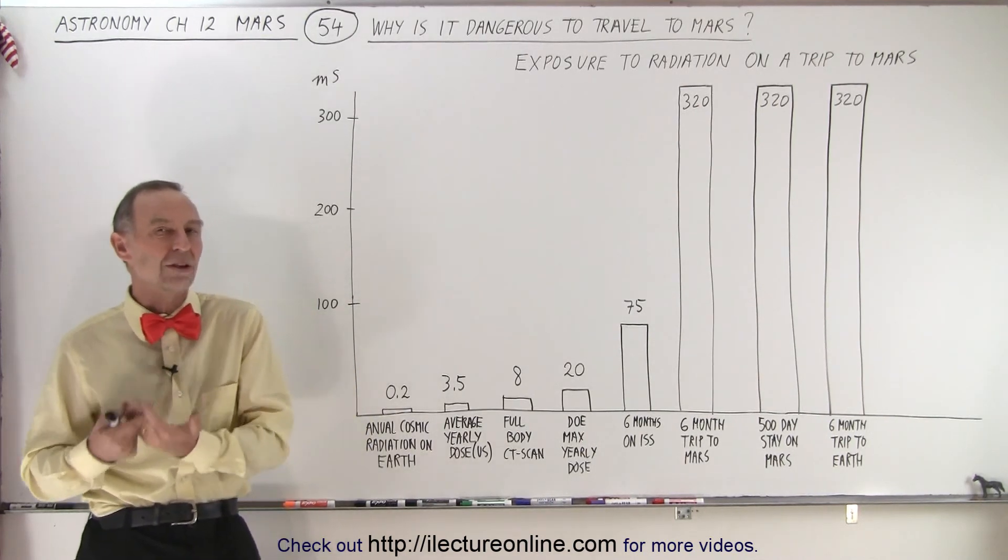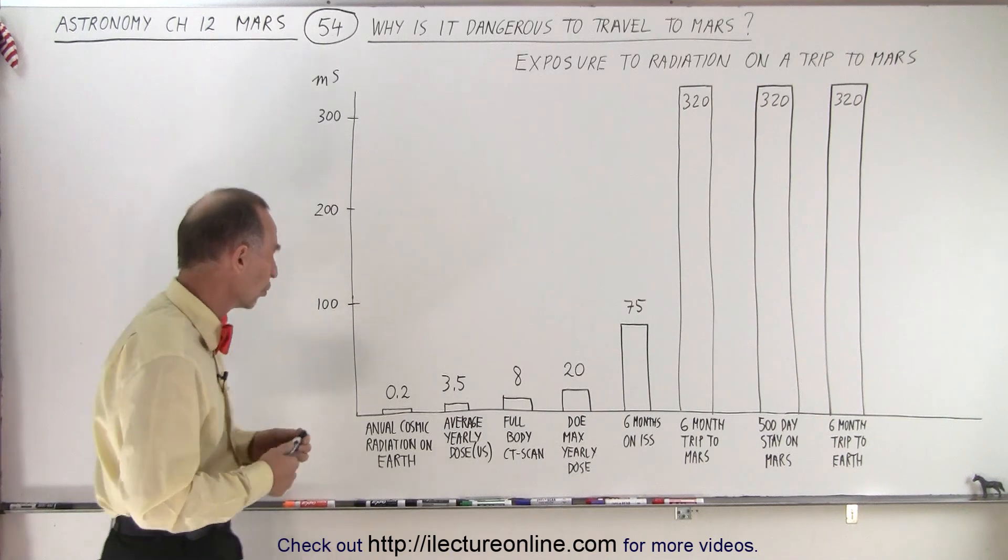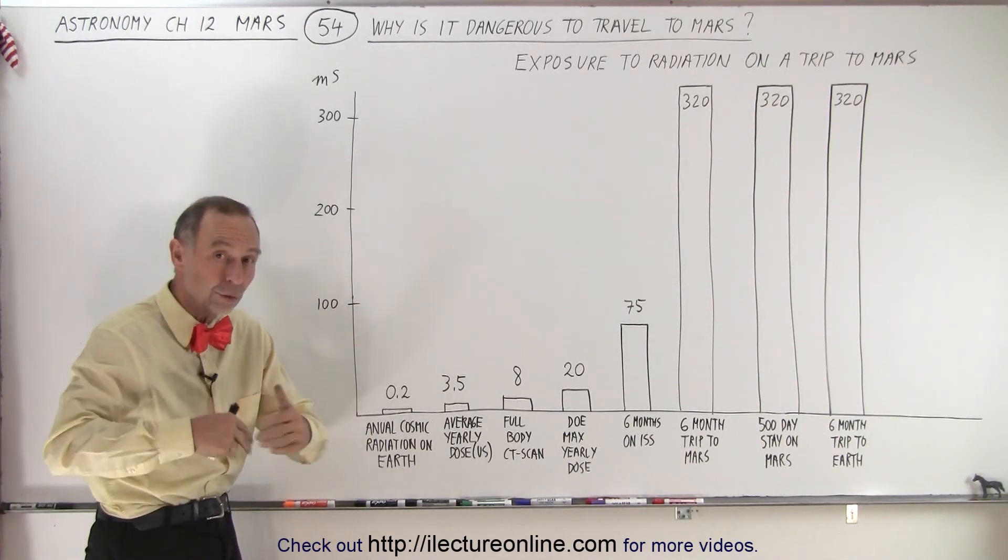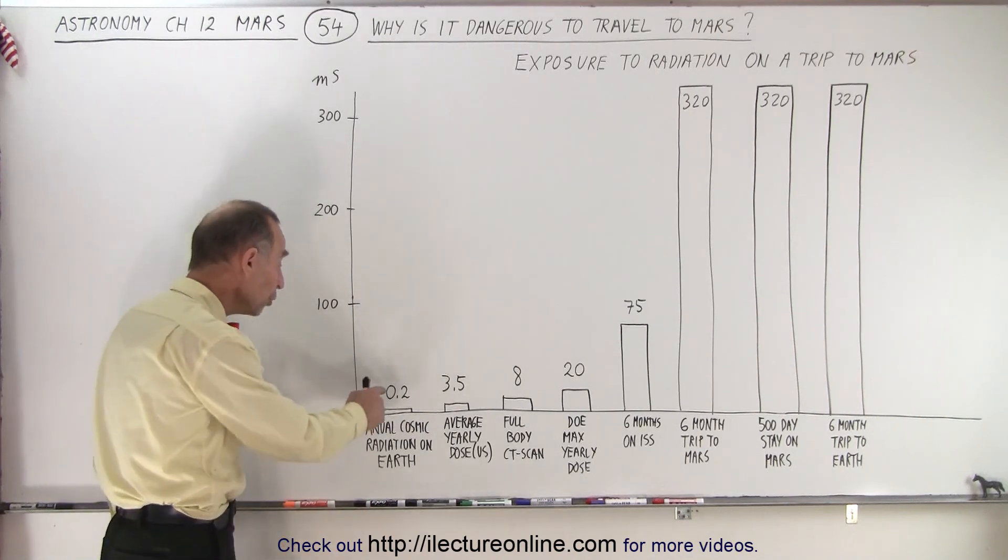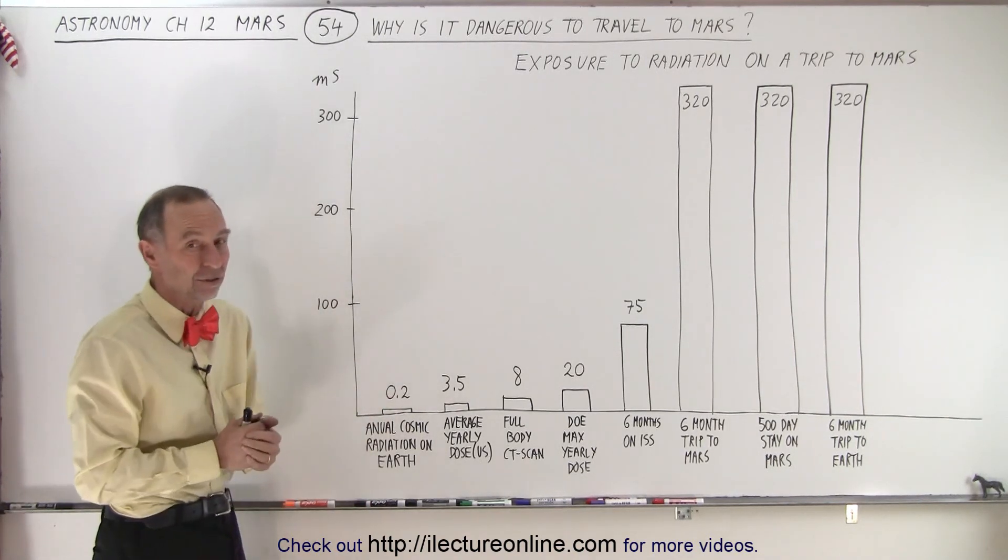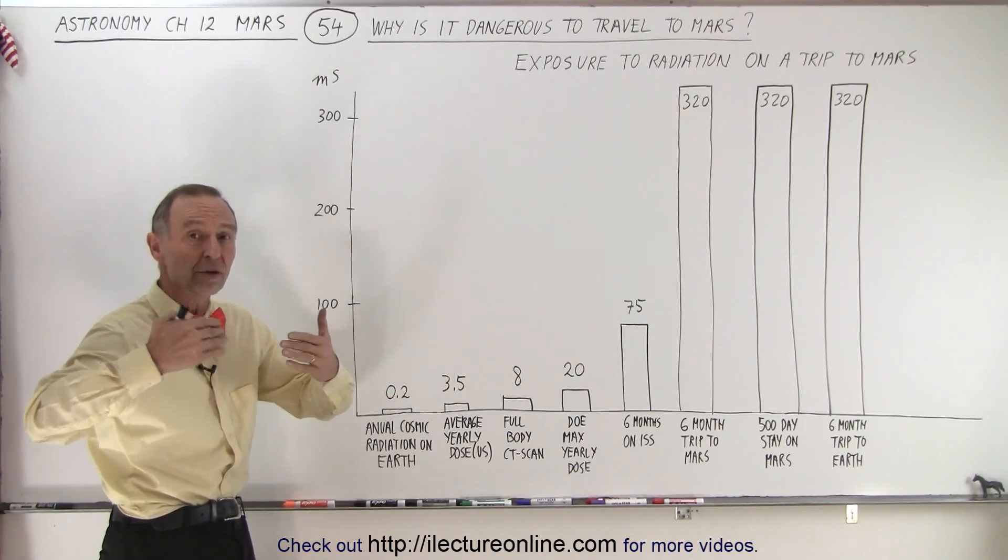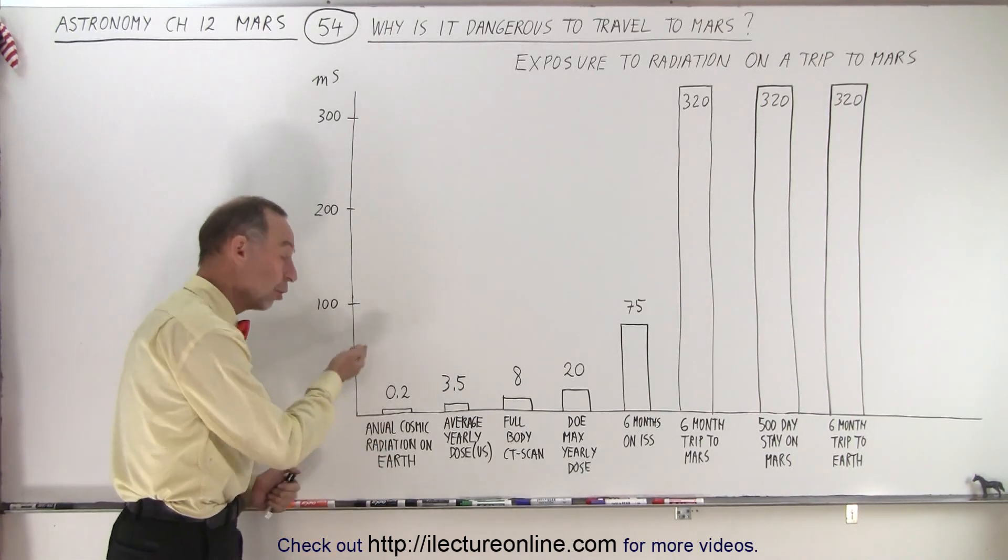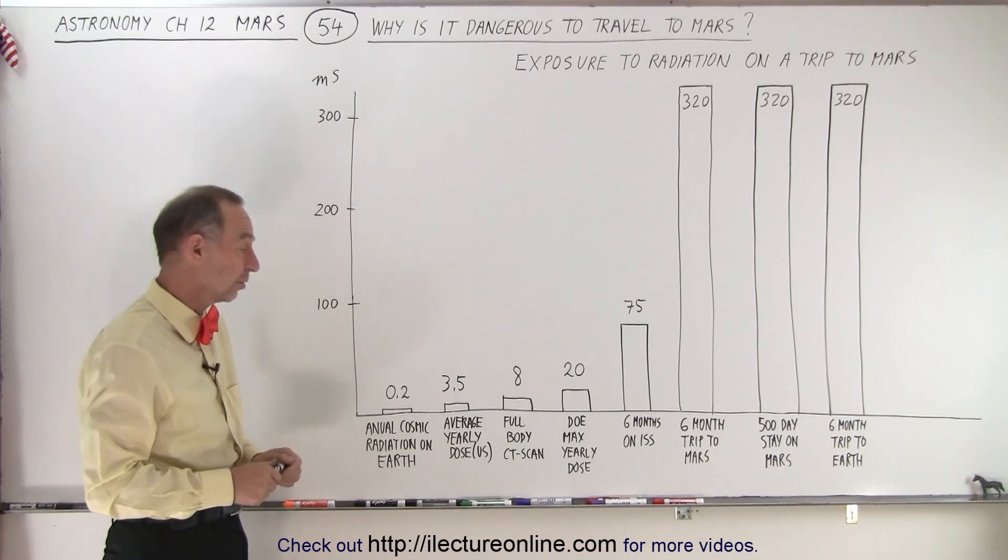Now let's see what kind of radiation we are typically exposed to. The annual cosmic radiation on Earth, on the surface of the Earth, is only 0.2 millisieverts. That's a relatively small dose because we're relatively protected at low elevations. This number does go up if you live at higher elevations.